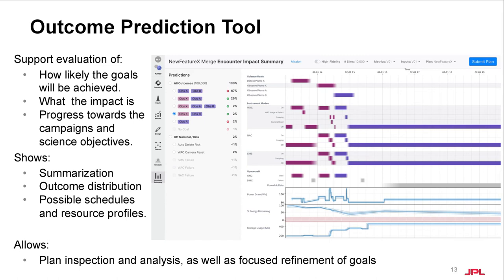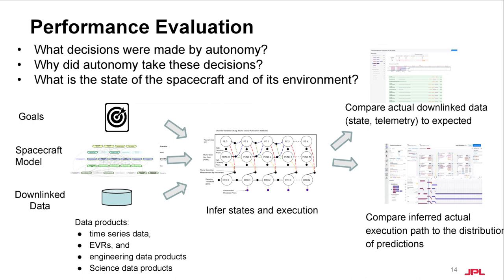Let's now switch gears to downlink. At some point, we hear back from the spacecraft and we receive time series data, event records or EVRs — which are printf statements produced by the onboard flight software — and data products, for example images. On the ground, our job is to rehydrate this data to address three key questions: one, what decisions were made by onboard autonomy? Two, why were these decisions made? And three, what is the state of the spacecraft and of its environment? To do this, we created a recipe with three ingredients: the data from the spacecraft, the goals we sent up during uplink, and our knowledge of the spacecraft hardware and software in the form of models. We used these ingredients to reconstruct what happened and why through state estimation, and displayed it to users to ensure they have a full understanding of the spacecraft state and its decisions.